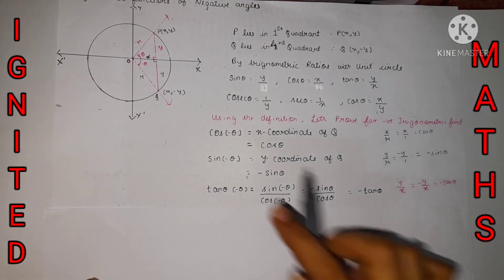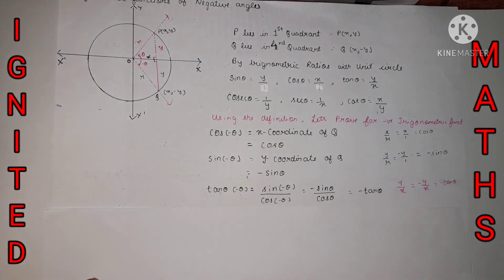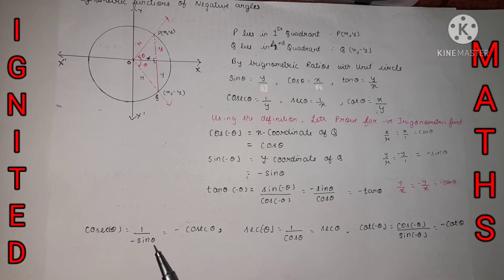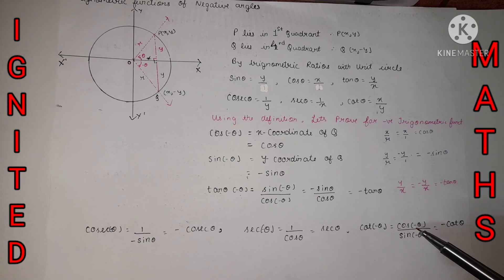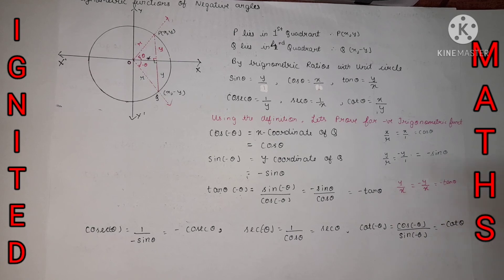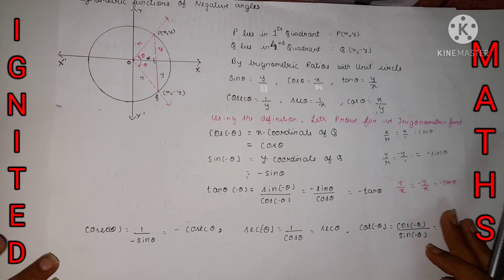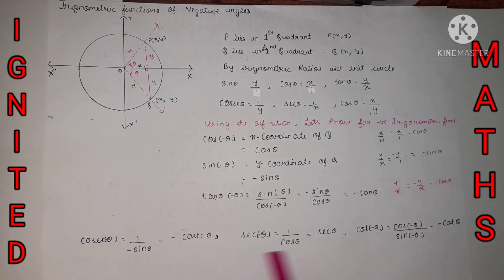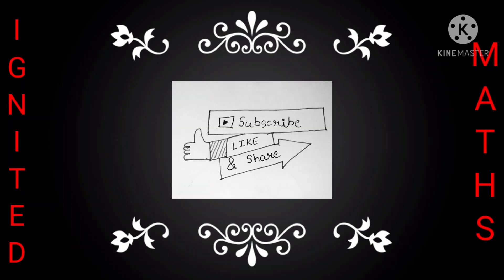The remaining trigonometric functions follow from these results. Cosec of minus theta equals one over sine of minus theta. Sec of minus theta equals one over cos of minus theta. Cot of minus theta equals cos of minus theta over sine of minus theta, or equivalently one over tan of minus theta. Applying the formulas we have already proved gives the remaining identities easily. Thank you for watching. If Igniter Max is helpful, don't forget to subscribe.